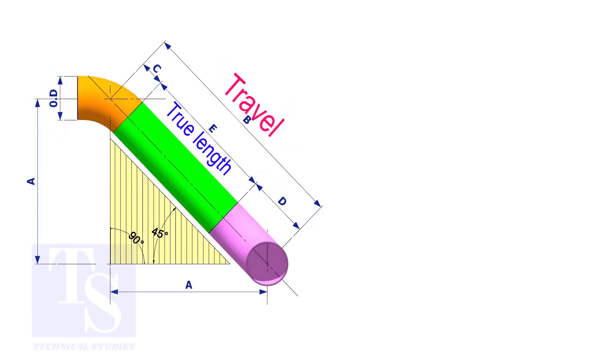Assume that the elbows are short radius. Nominal pipe size is 4 inches. The travel length is 1500 millimeters. The joint gap is 3 millimeters. Calculate the true length of the spool.